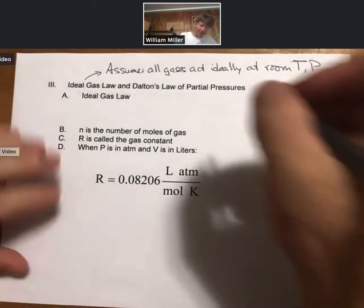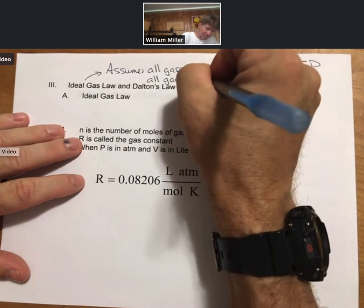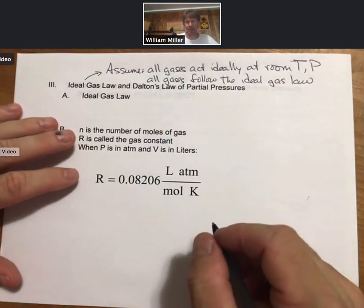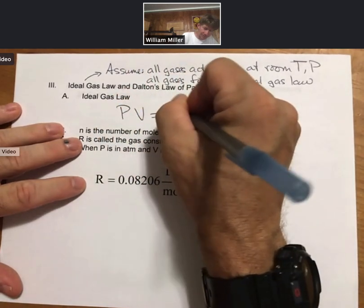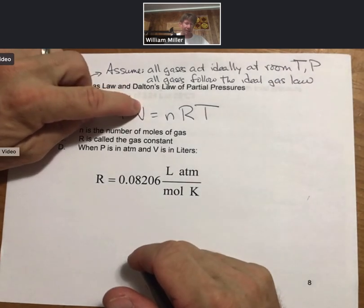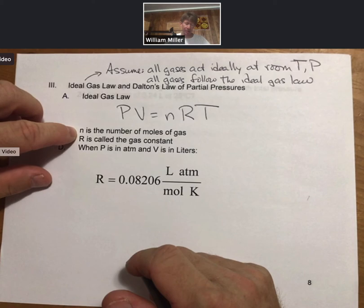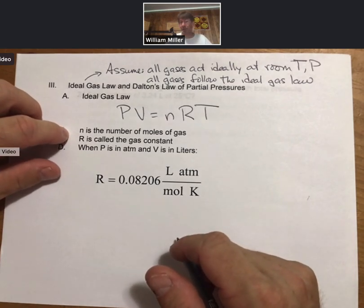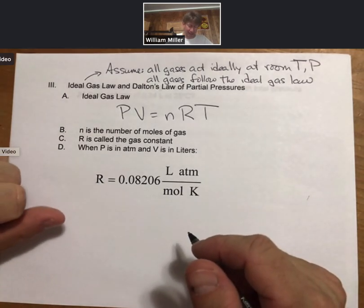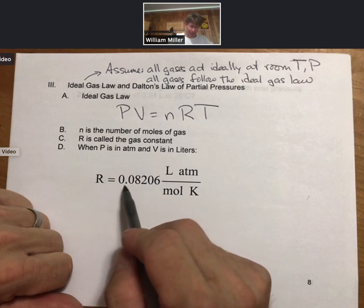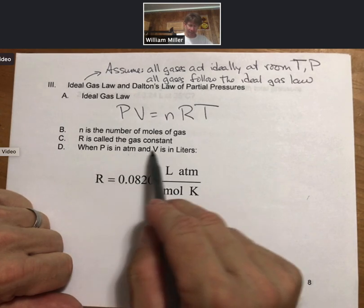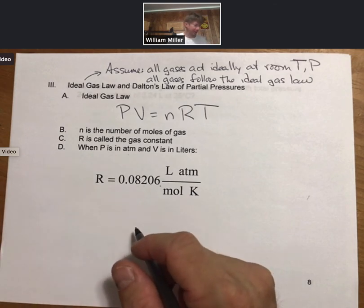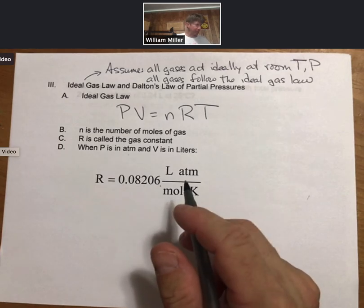And that means that all gases follow the ideal gas law. Now let me give it to you. It is PV equals nRT where P is pressure, V is volume, T is temperature, lowercase n is the number of moles of gas, and R is called the gas constant. It's also called the ideal gas constant and the universal gas constant. It has the number 0.08206 when pressure is in atmospheres and volume is in liters.